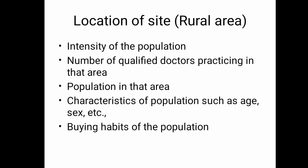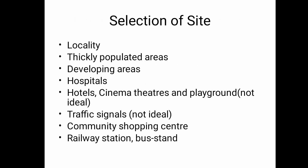Population intensity — in that area, there are qualified doctors who practice, and there are buying habits. To select a site, check whether the locality is an urban or rural area. Mostly, thickly populated and developing areas are preferred. If there is a hospital, hotel, cinema, or playground in that area, there will also be a pharmacy — it will be an ideal place. Traffic signals, community shopping centers, railway stations, and bus stands are also ideal site choices.